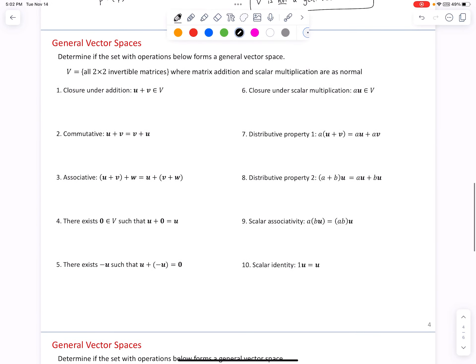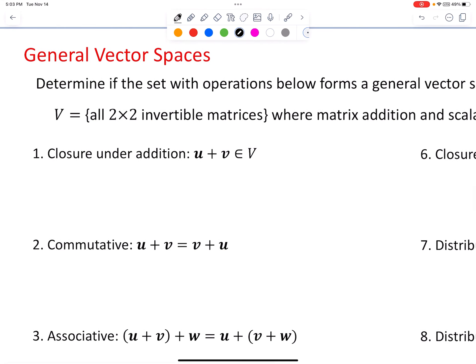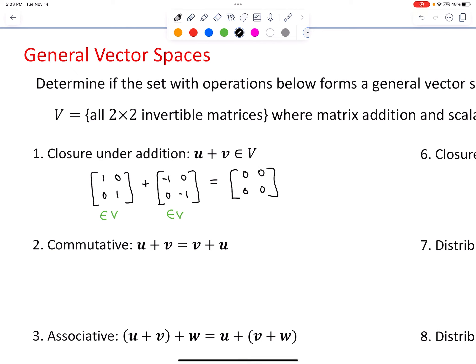Determine if the set of two-by-two invertible matrices with normal matrix addition and scalar multiplication forms a general vector space. Testing condition one: if you take two invertible matrices and add them together, is the result guaranteed to be invertible? A simple counterexample: the identity matrix is invertible, and the negative identity matrix is also invertible. But when added together they produce the zero matrix, which has zero determinant and is not invertible. So this set is not closed under matrix addition.